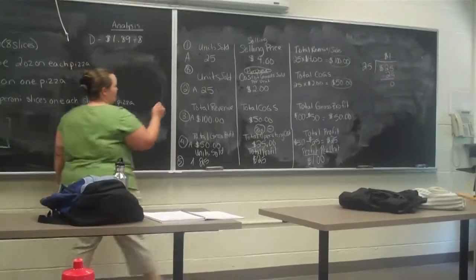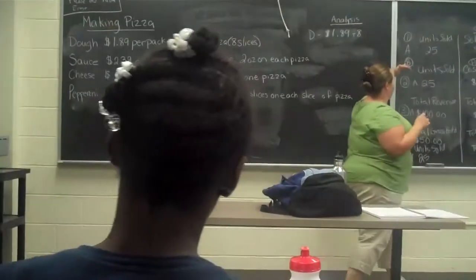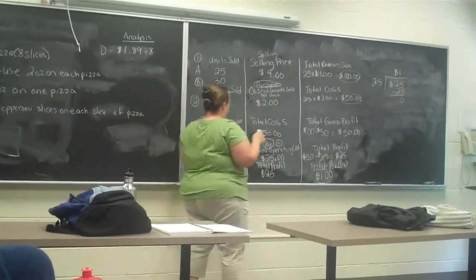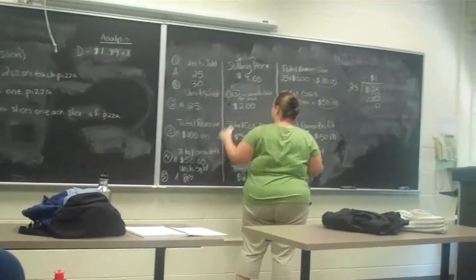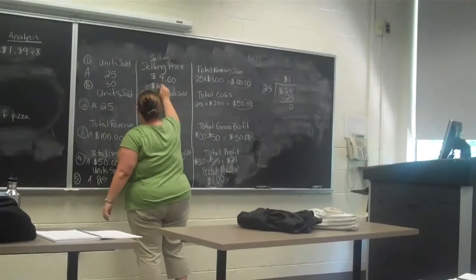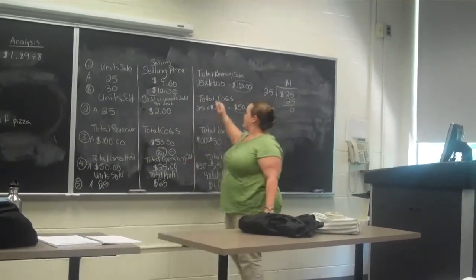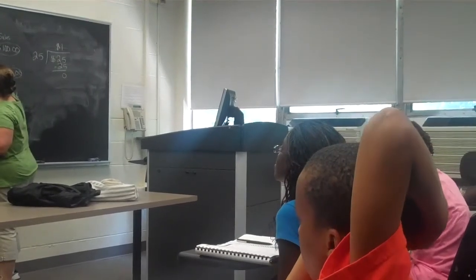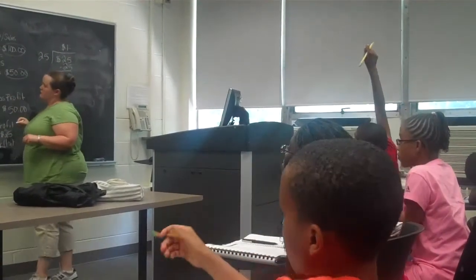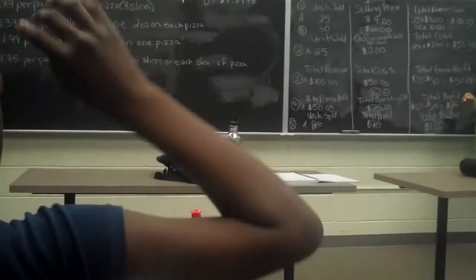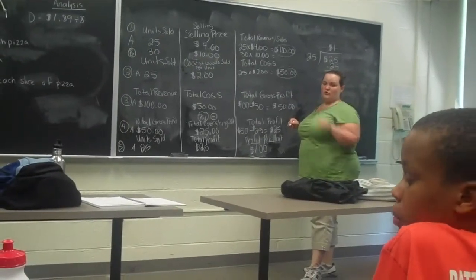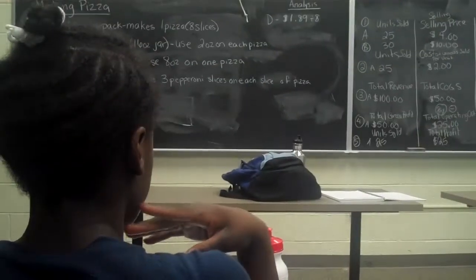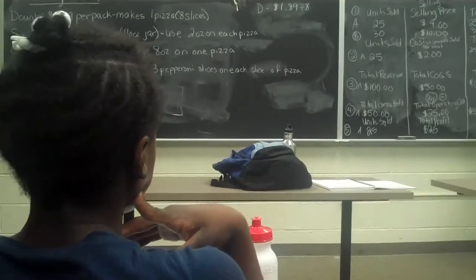Company B — how many things did they sell? 30. And how much did they sell them for? $10 each. So how do we find the total revenue? Multiply — 30 times $10. And what does that equal? $300. That's a lot of money!